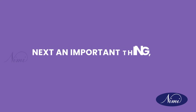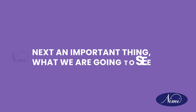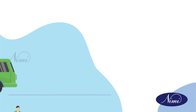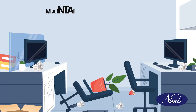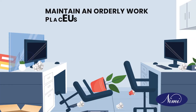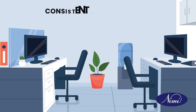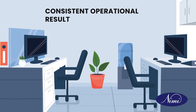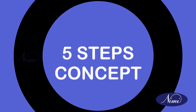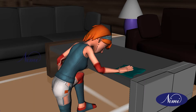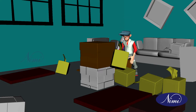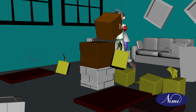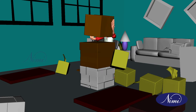5S is a system to reduce waste and optimize productivity through maintaining an orderly workplace and using visual cues to achieve more consistent operational results. It is a people-oriented and practice-oriented approach. The 5S expects everyone to participate in it, and it becomes a basis for continuous improvement in the organization.